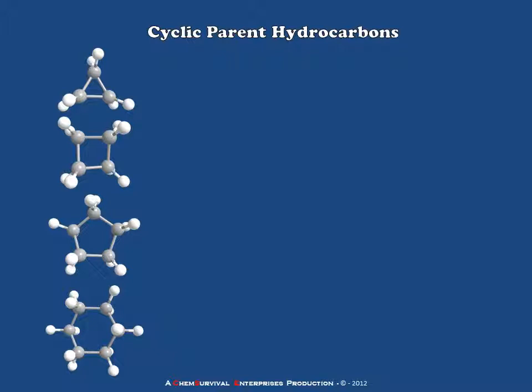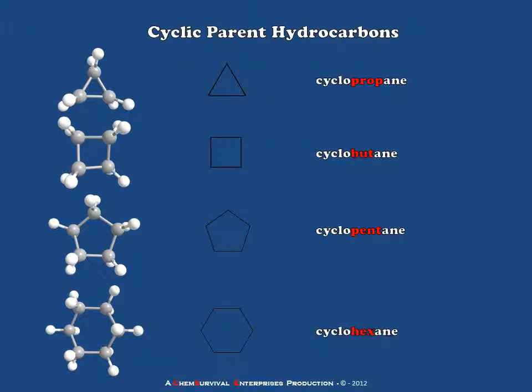Shown in this slide are the first four cyclic hydrocarbons which are possible. Of course, it's not possible to have a cyclic hydrocarbon with 1 or 2 atoms, so the smallest would contain 3. To draw each of these in a skeletal representation, they would look something like this.